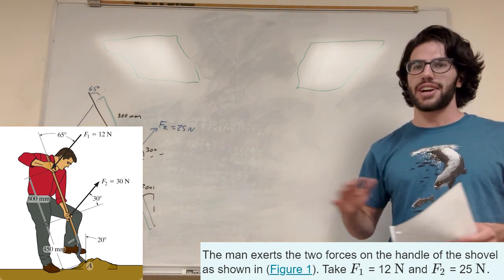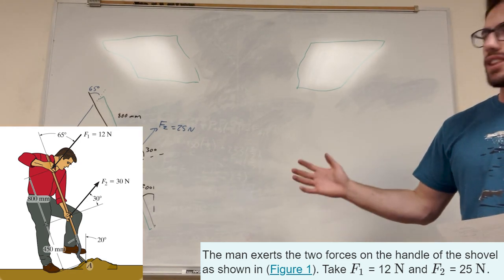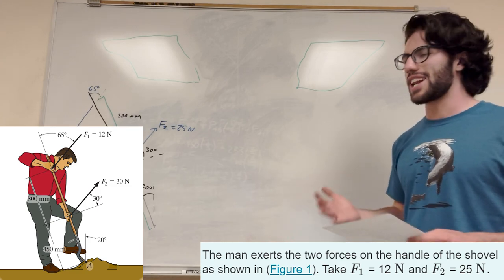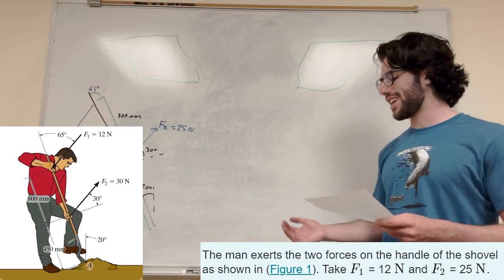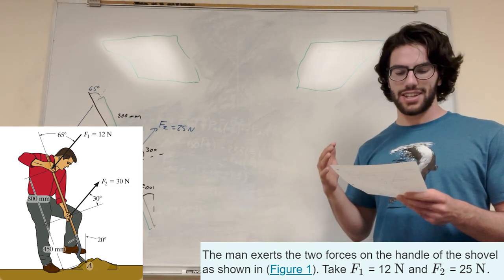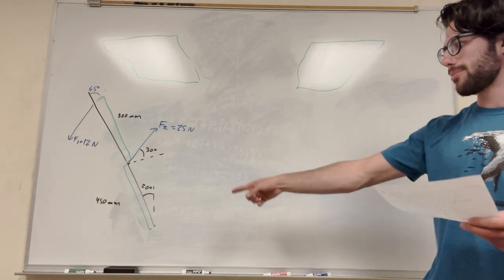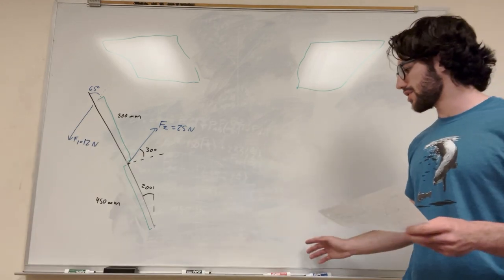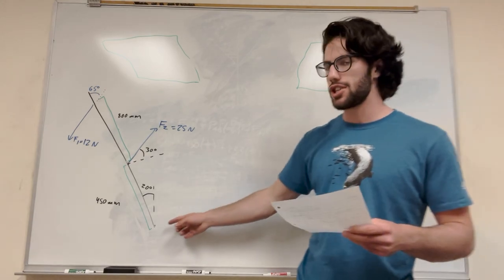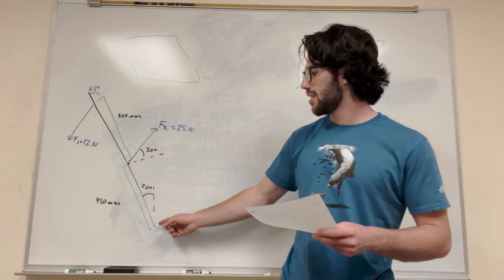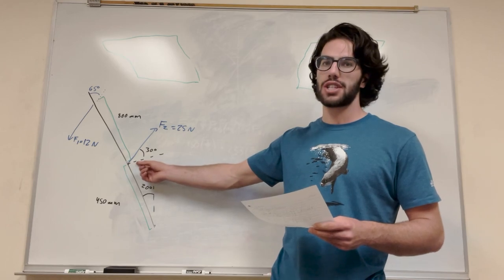What's up cop gang? Alright, so we got this crazy problem here. We got this dude at the shovel, and there's a lot of forces and a lot of angles. So how are we going to do this? Well, we want to find the moment around point A at the bottom there. So if we're trying to find the moment of A, we're going to need a couple things — we're going to need position vectors from the origin, or A, to where the force acts.